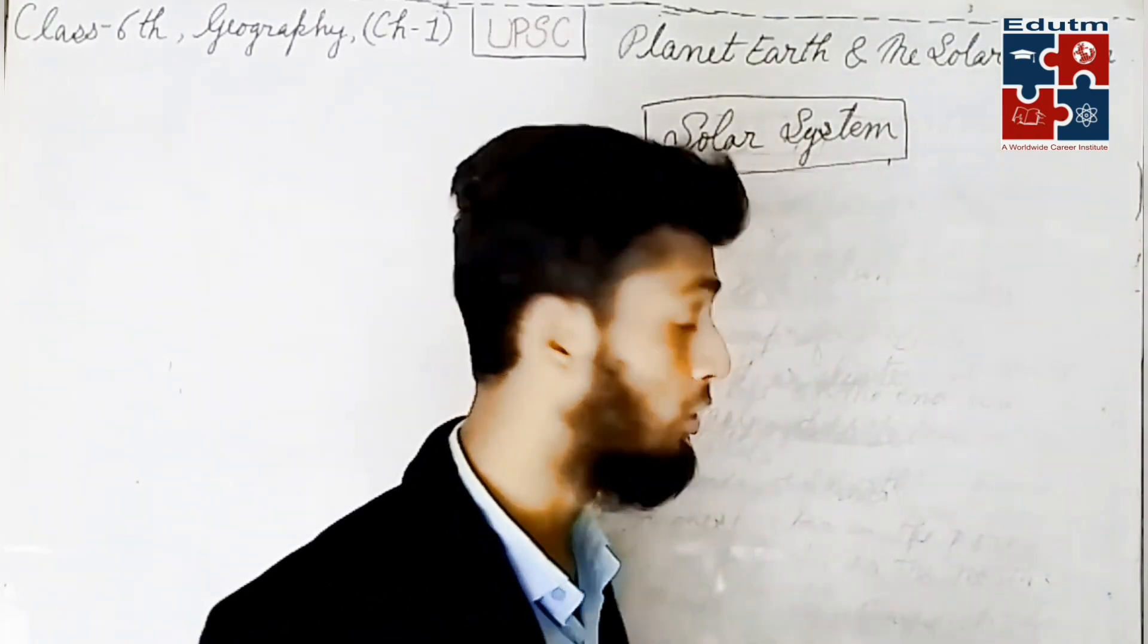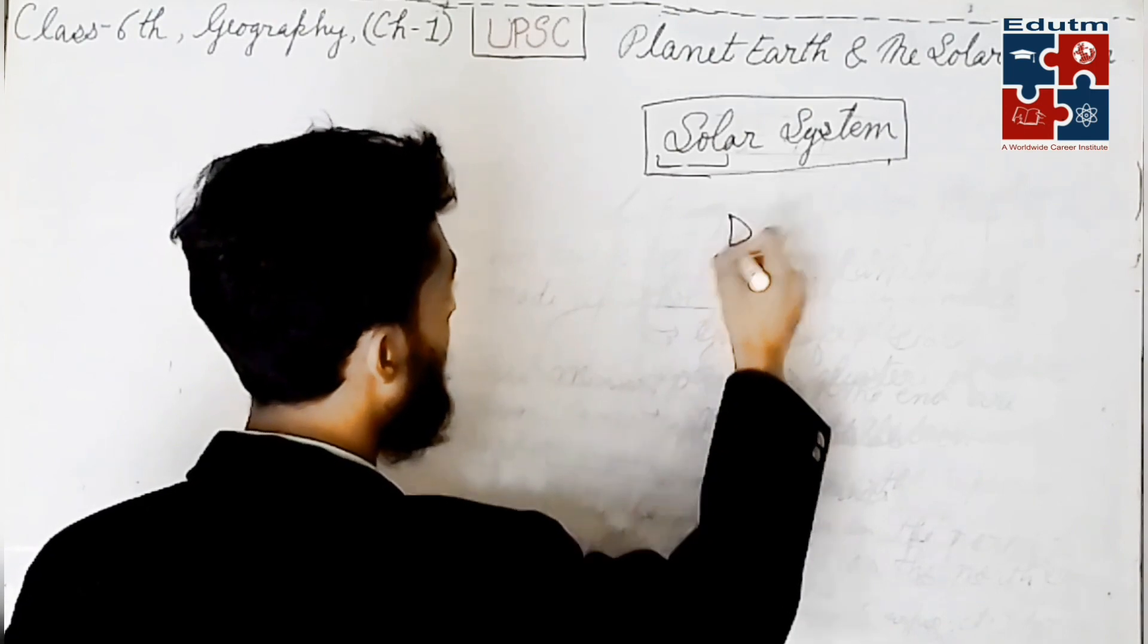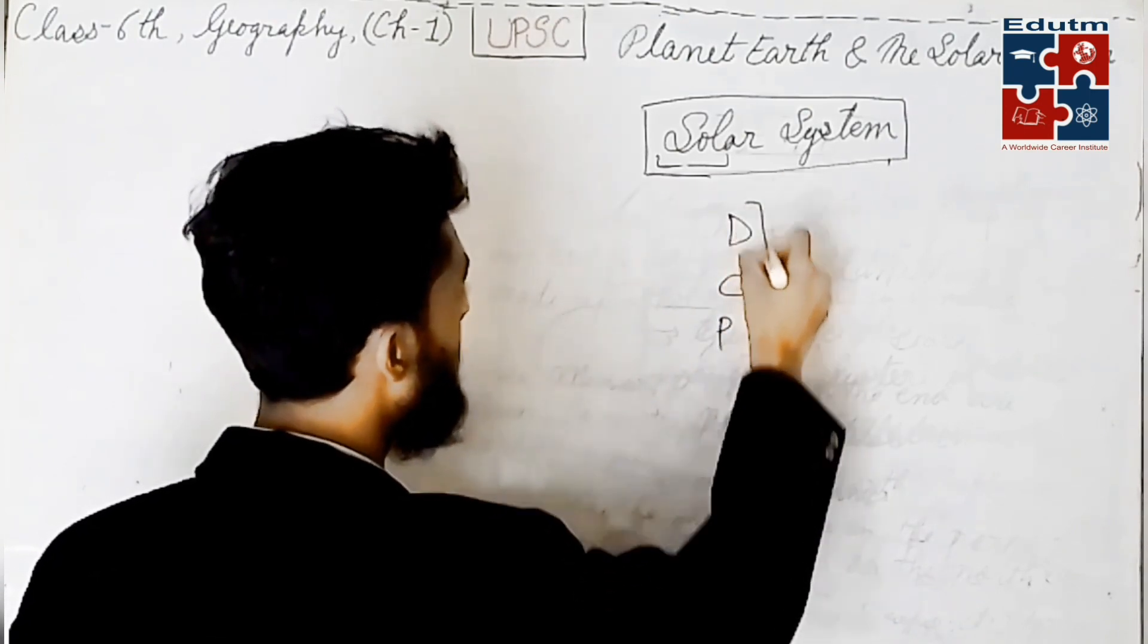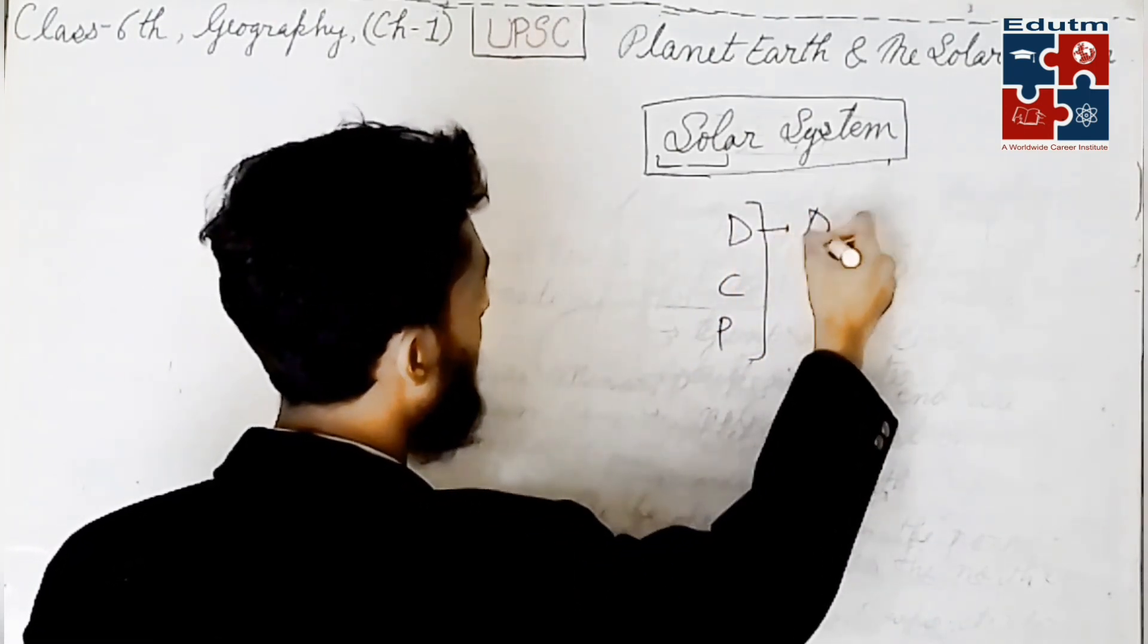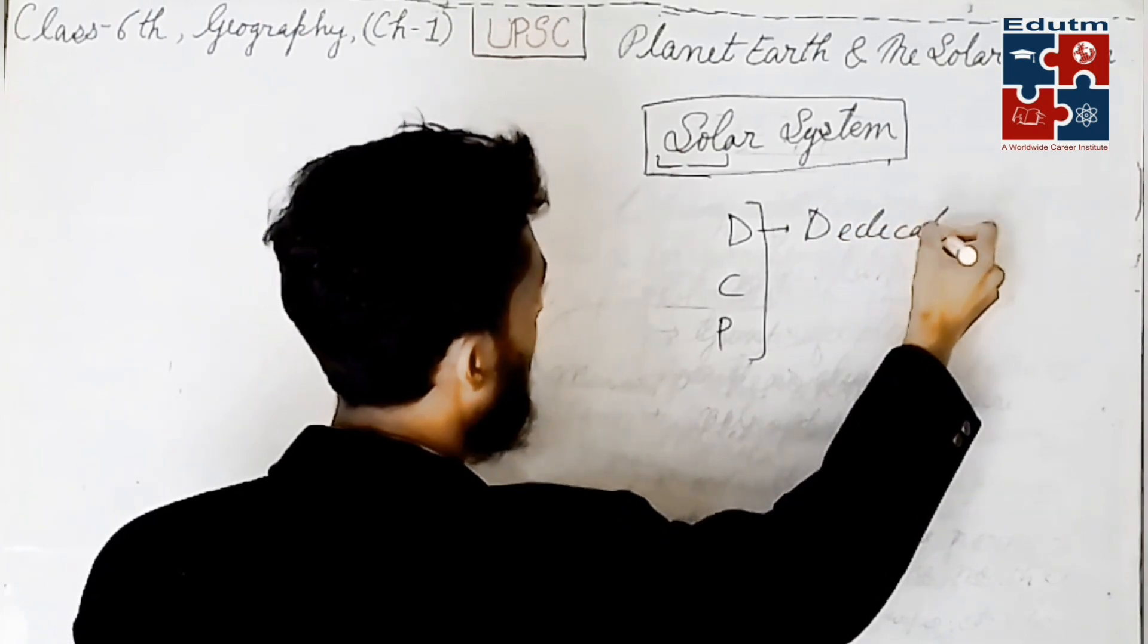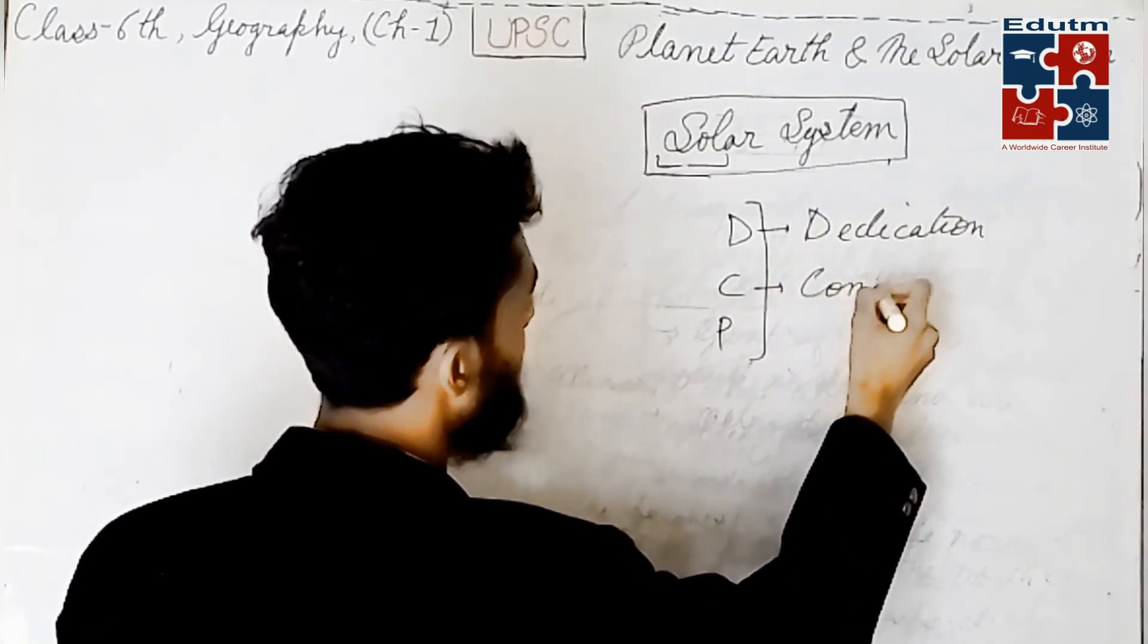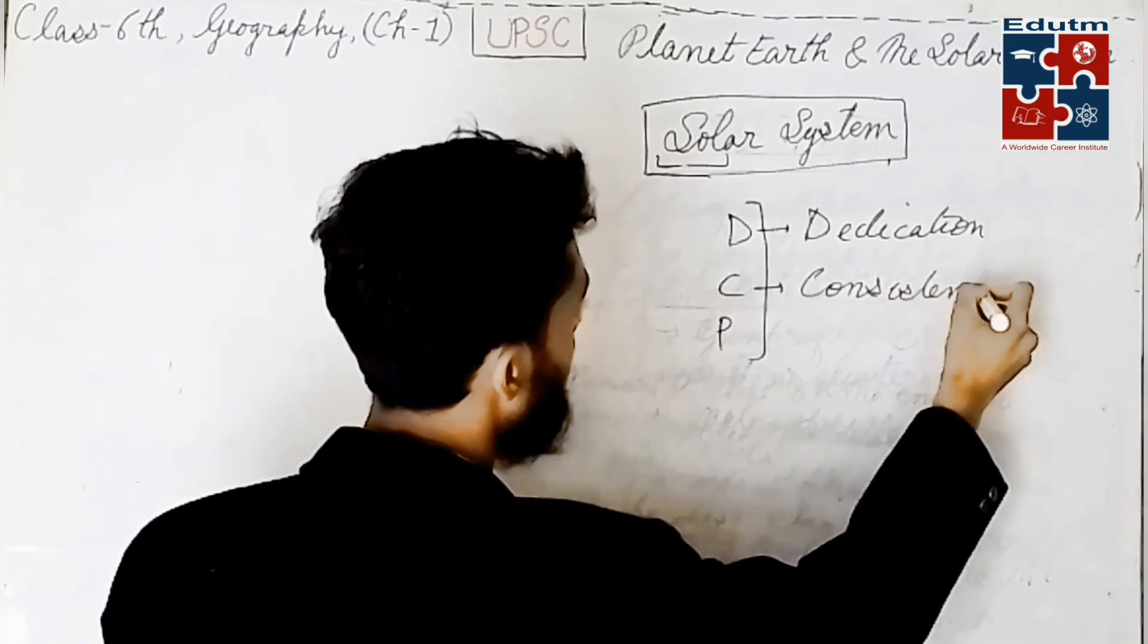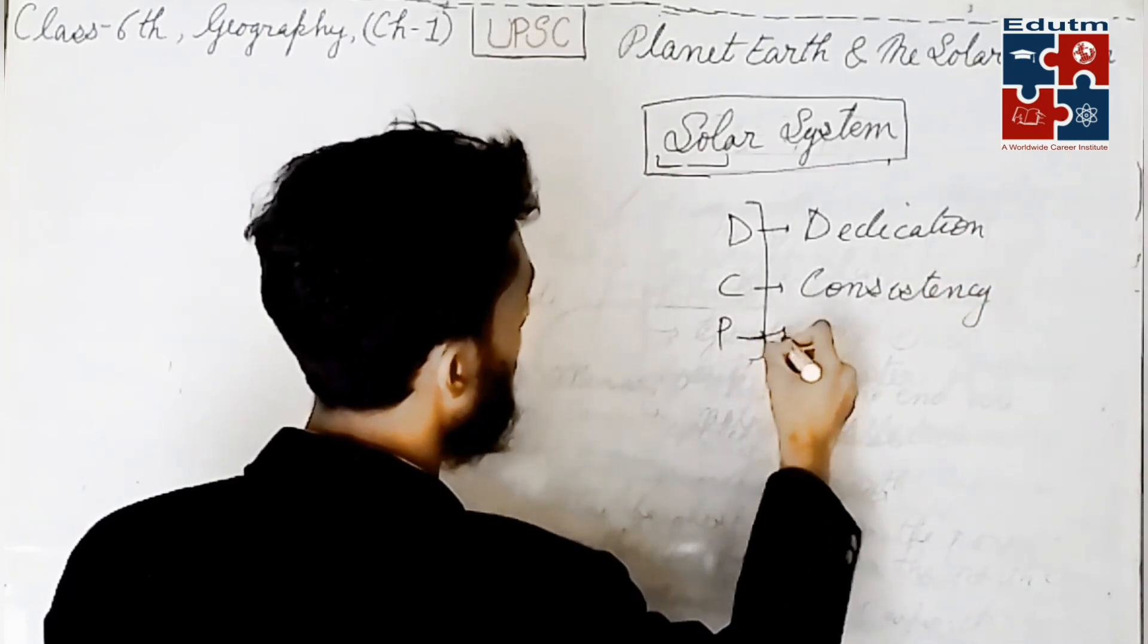I have told you one rule. Watch my old videos. I told you DCP. What is the meaning of DCP? D for dedication, C for consistency, and P for patience.